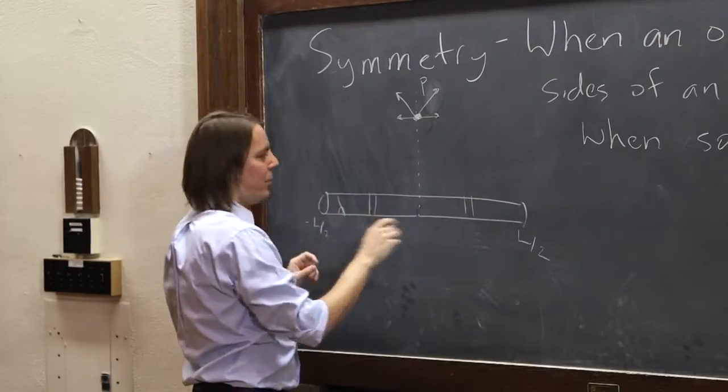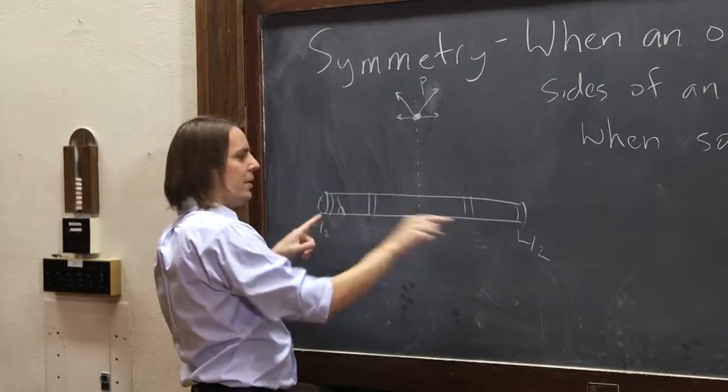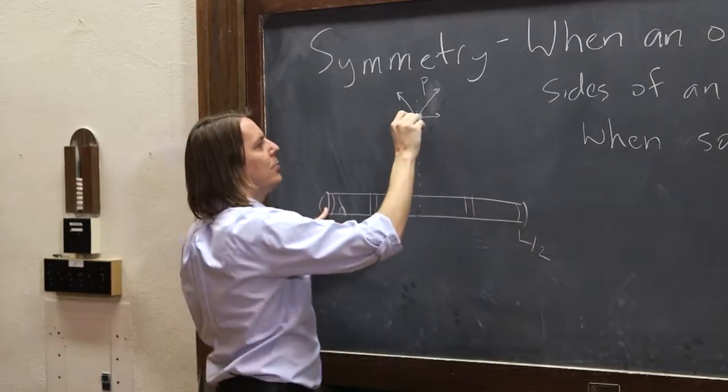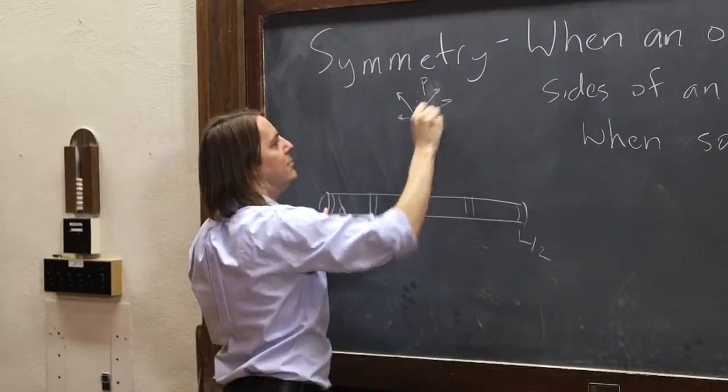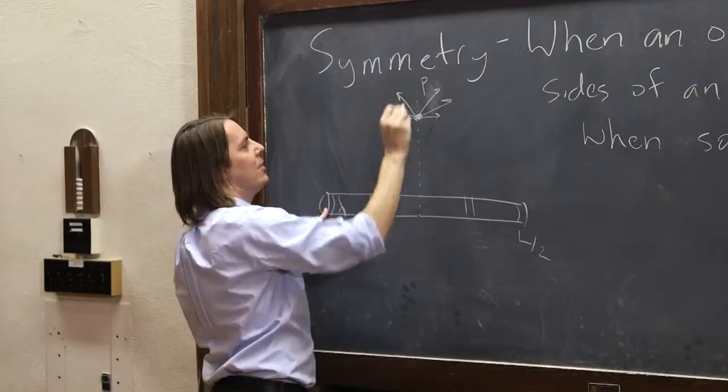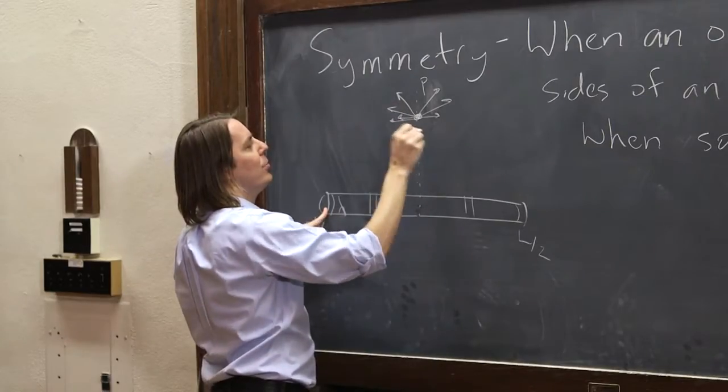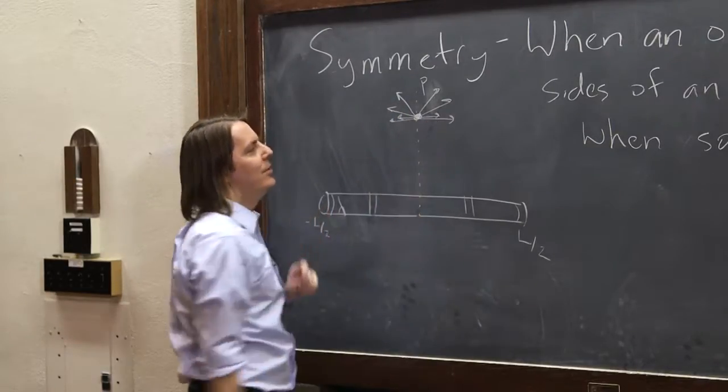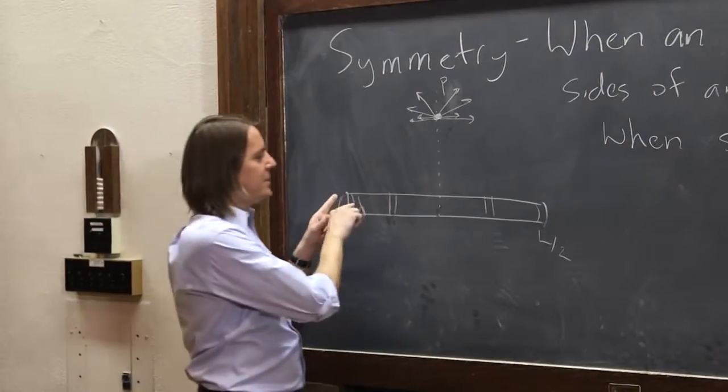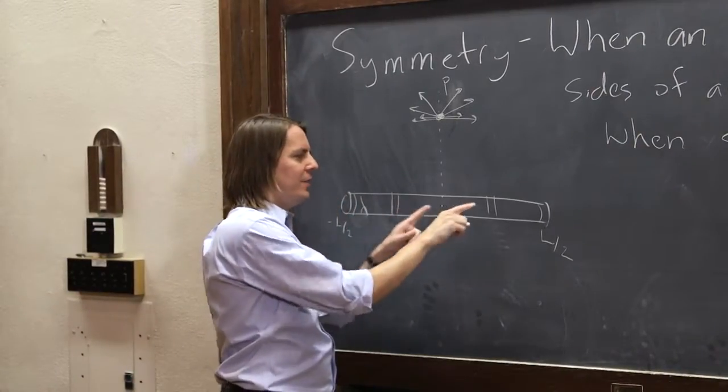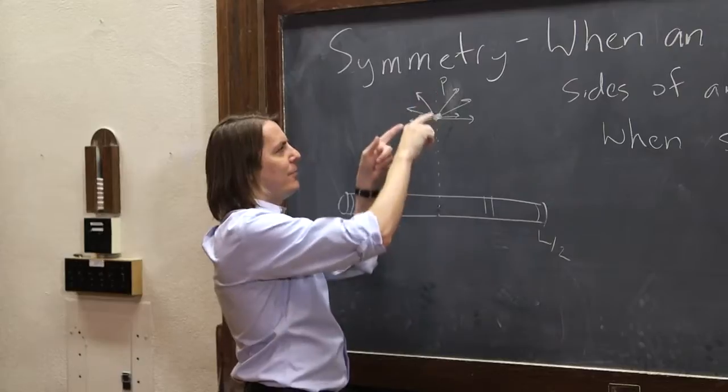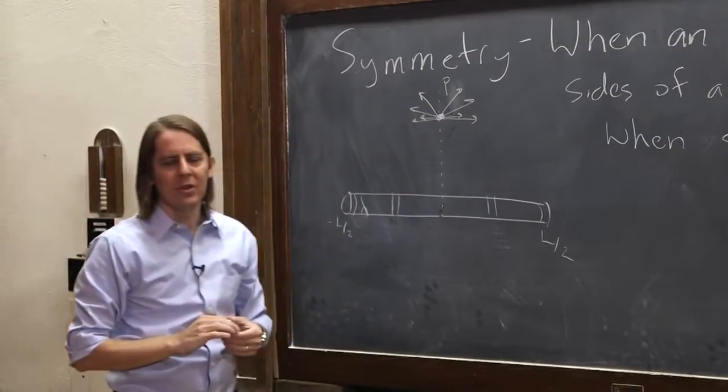And you could say, well, what about this dX way out here on the end? It also has a symmetric dX. It would create a field, dE kind of like that, and a dE kind of like that. And its x-axis component would be that. Its x-component would be that. Any dX you come up with on one side has a dX on the other side that is symmetric. They make symmetric vectors. And the x-axis always cancels.